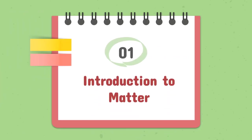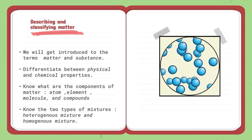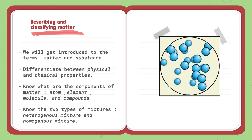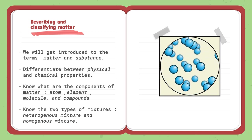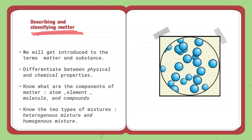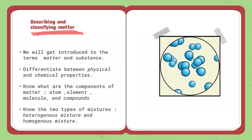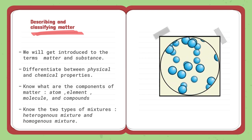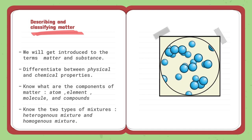The first topic of this unit is Introduction to Matter. Our first lesson is Describing and Classifying Matter. We will first get introduced to the terms matter and substance. And then we will be able to differentiate between two properties which are physical and chemical. We will learn the components of matter - atom, element, molecule, and compounds. And then we have two types of mixtures, heterogeneous mixtures and homogeneous mixtures.